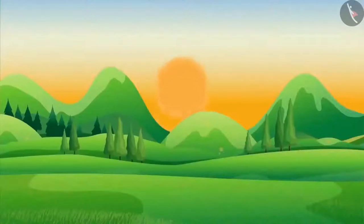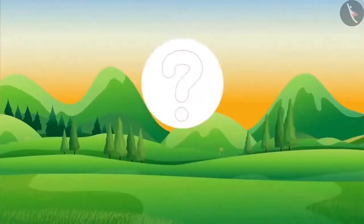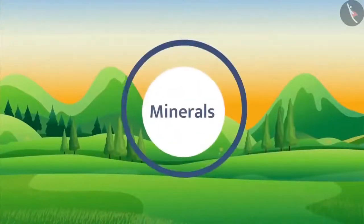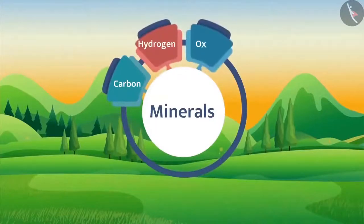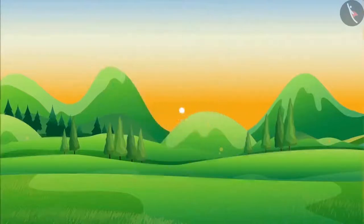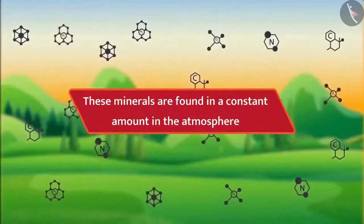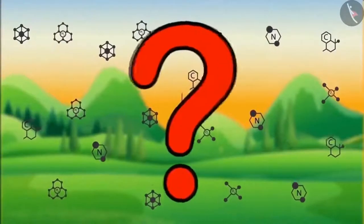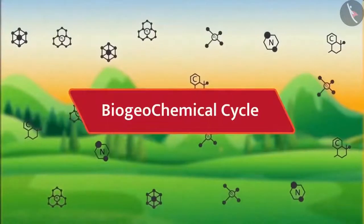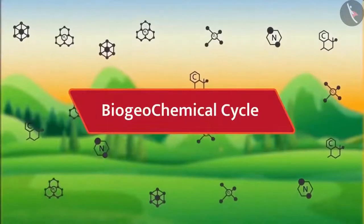Friends, do you know what kind of minerals are found on the earth? Minerals such as carbon, hydrogen, oxygen and nitrogen are found on the earth. Do you know these minerals are found in a constant amount in the atmosphere? Let us see how, by the help of biogeochemical cycles.